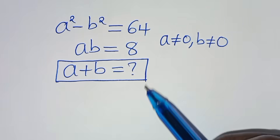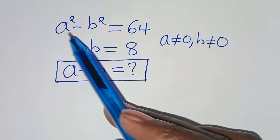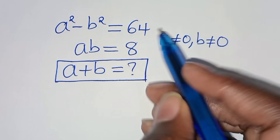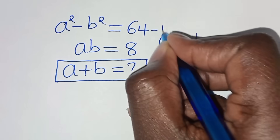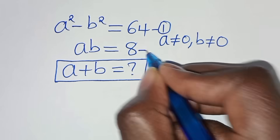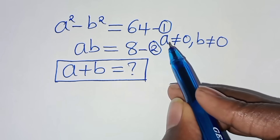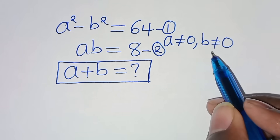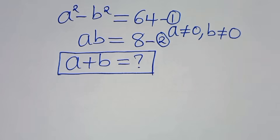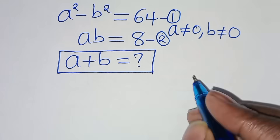Hello everyone, you are welcome to solve this nice algebra problem. We have a squared minus b squared equals 64 — call this equation 1. And a times b equals 8 — call this equation 2. Also, a is not equal to 0 and b is not equal to 0. So what is the value of a plus b?